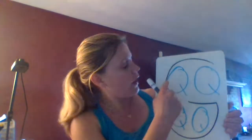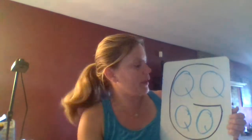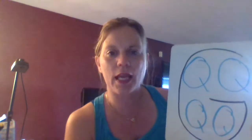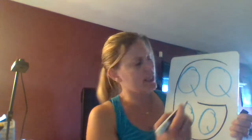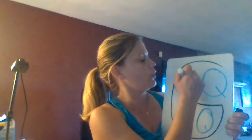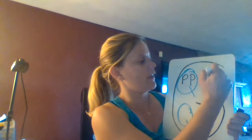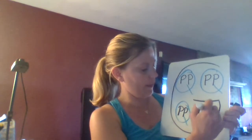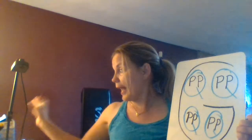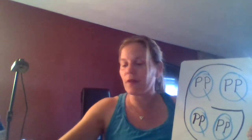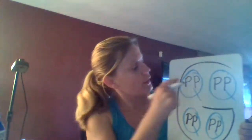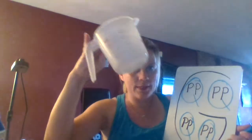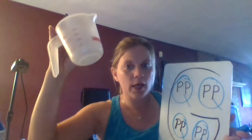Each of these quarts — or each of these queens, maybe from the north, south, east, and west — each has two princesses. In our video it has two P's that fit in there: two princesses, or one prince and one princess — you can say it however you like. So in every one of these quarts you can fit two pints.